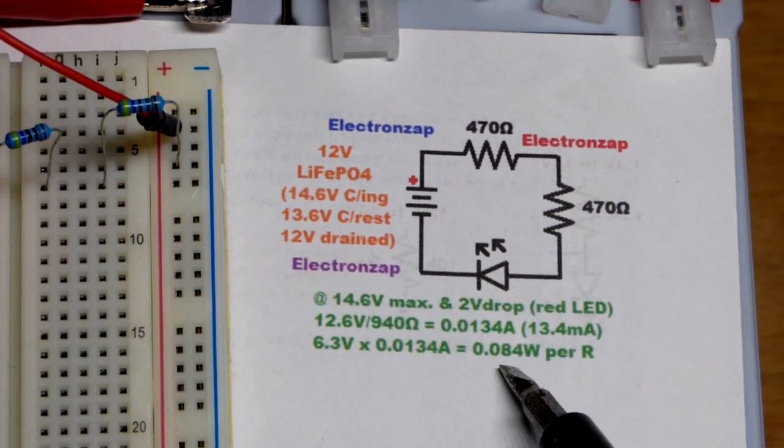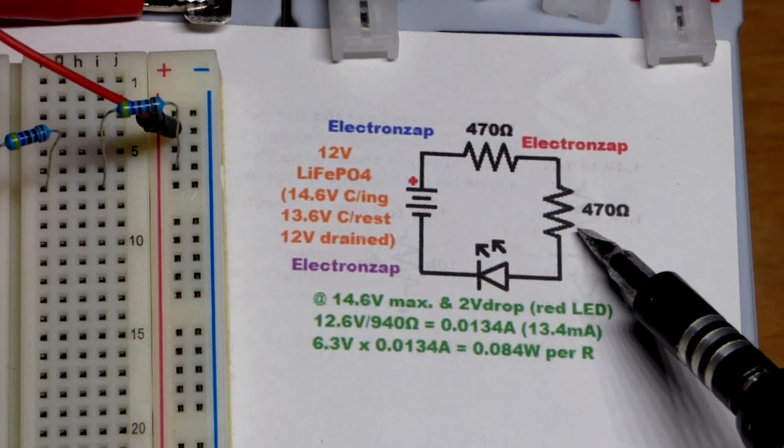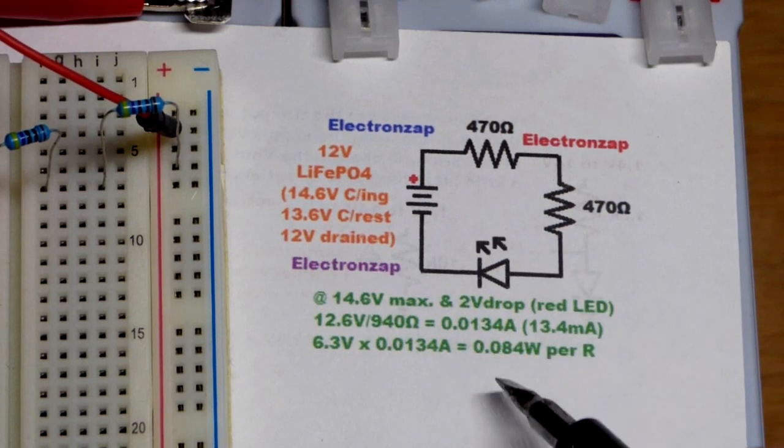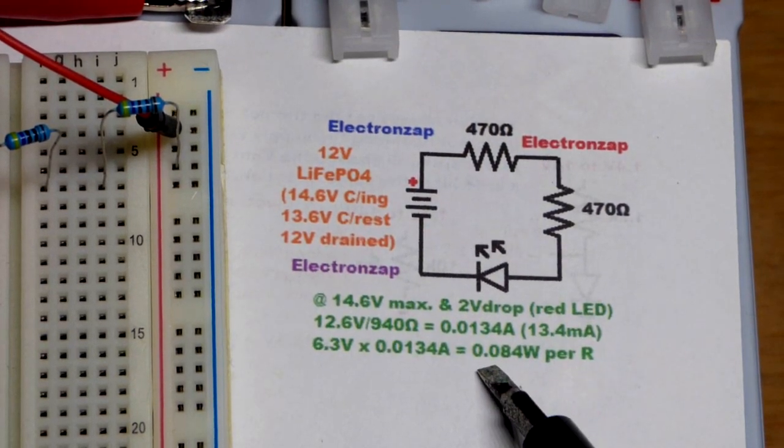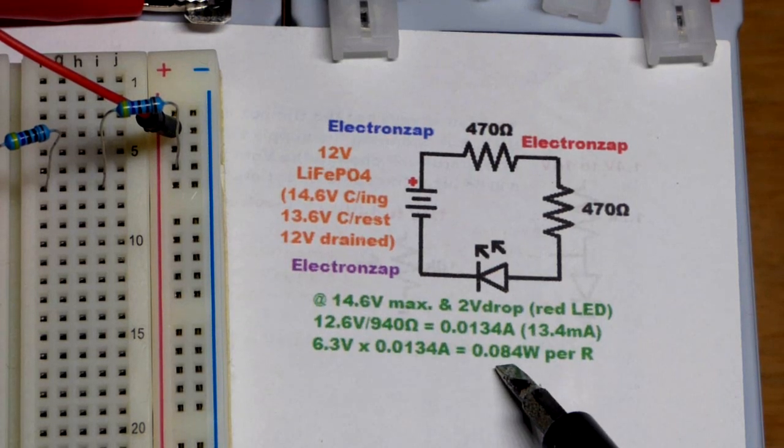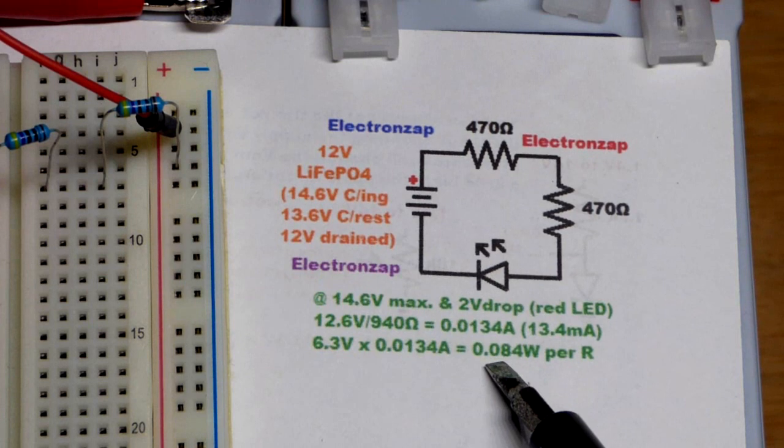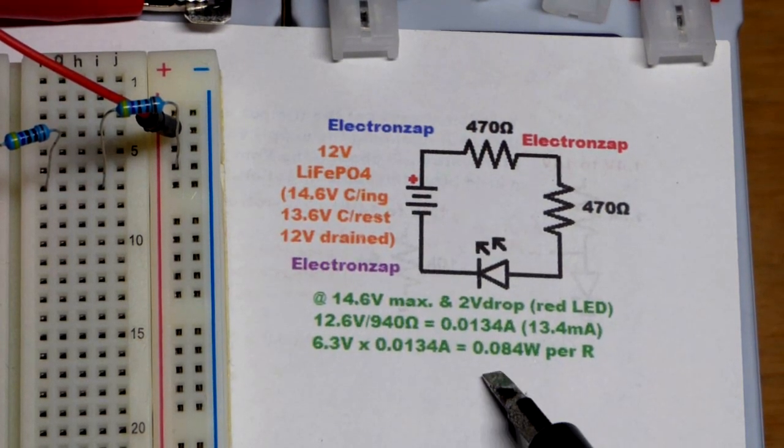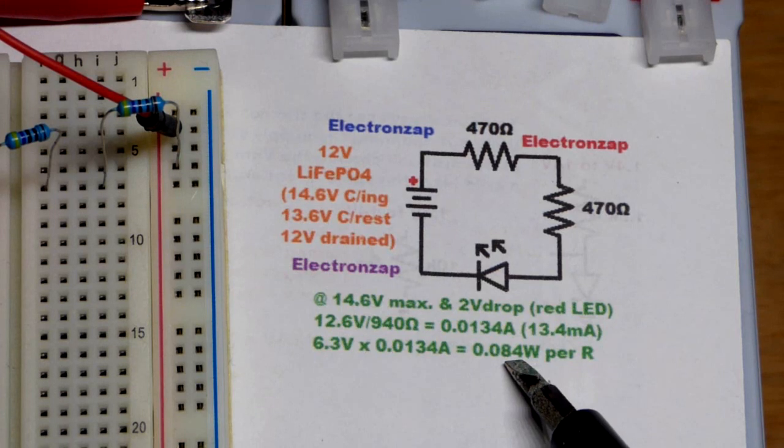And so there you can see the wattage, 0.084. So if we used a single resistor that happened to be 940 ohms, 1000 ohms is close to that, then it would be absorbing all of the power, a lone resistor. So that would be like 0.168. And so they have a wattage rating of 0.25, so it's not exceeding the wattage rating, but you still want to stay below half that, 0.125. So if we double this, it's quite a bit more than 0.125.